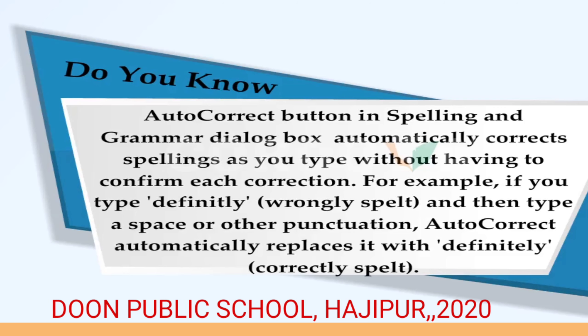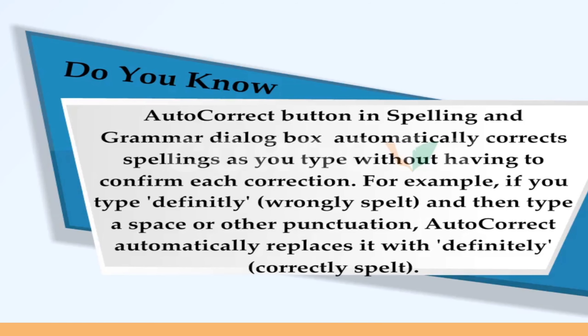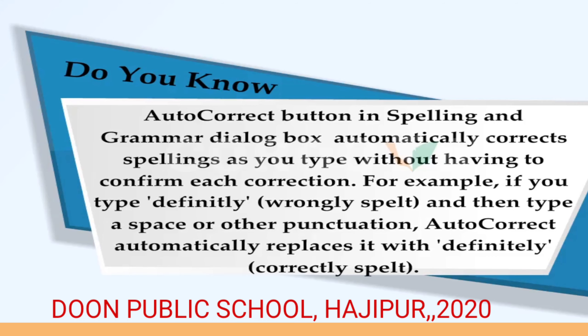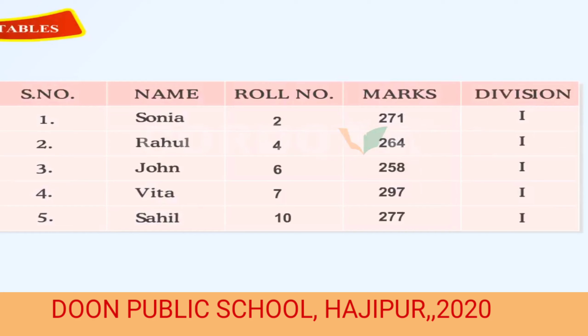The AutoCorrect button in the spelling and grammar dialog box automatically corrects spellings as you type without having to confirm each correction. For example, if you type a word incorrectly and then type a space or punctuation, AutoCorrect automatically replaces it with the correctly spelled word.